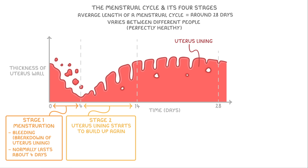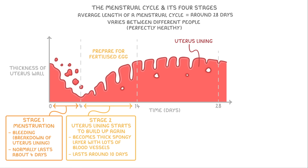Stage 2 is when the uterus lining starts to build up again and becomes a thick spongy layer with lots of blood vessels in it. It lasts around 10 days, up to day 14, and its role is to prepare the uterus lining for a fertilised egg, because this is where any fertilised eggs will implant.